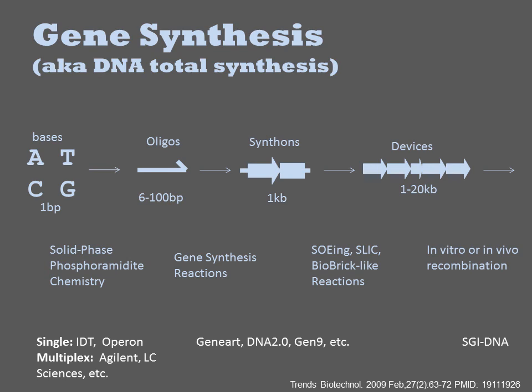Commercial suppliers led by IDT and Operon provide oligonucleotide synthesis with next-day delivery at five-fold lower prices than can be achieved with the instruments that one could purchase for in-house use.